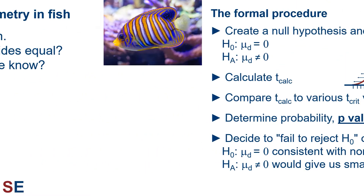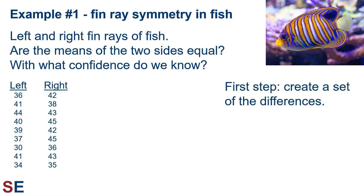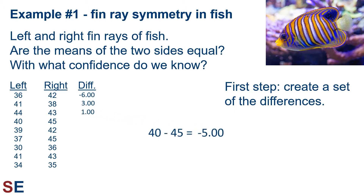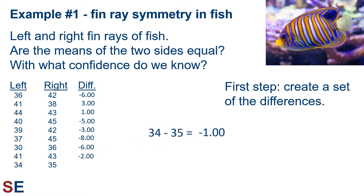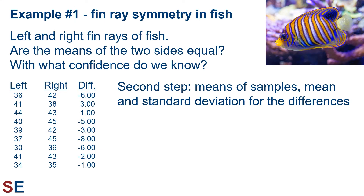For our first example, we look at the number of rays in the pectoral fins on the left and right sides of some fish, asking whether they're exactly the same or there's some asymmetry bias. Our data is the number of left and right fin rays for a set of fish. The first step is to create a set of differences, keeping track of whether they're positive or negative. The differences are: 36−42=−6, 41−38=+3, 44−43=+1, 40−45=−5, 39−42=−3, 37−45=−8, 30−36=−6, 41−43=−2, and 34−35=−1. These are the values we will actually use for the t-test.